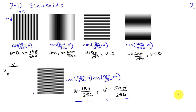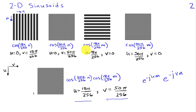The discrete space Fourier transform uses e to the minus j u m and e to the minus j v n rather than real cosines or sines. The real part of these terms are just cosines, and the imaginary part would be a sine version with a phase shift of pi over 2. These are the building blocks of our images: we can express an arbitrary image as a weighted combination of sinusoids of different horizontal and vertical frequencies.